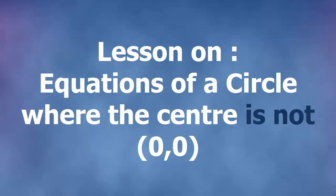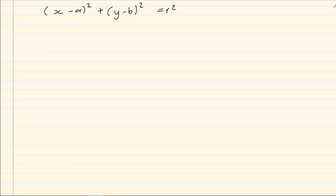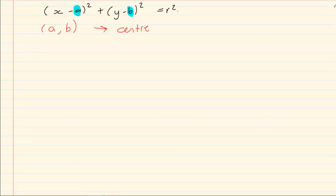Hi and welcome to my maths class. Today we are going to discuss equations of a circle where the center is not (0,0). We are also going to do various questions that can be asked in this section. The standard equation for a circle where the center is not (0,0) is (x minus a) all squared plus (y minus b) all squared equals r squared, where a and b is the center of the circle, and r is the radius.